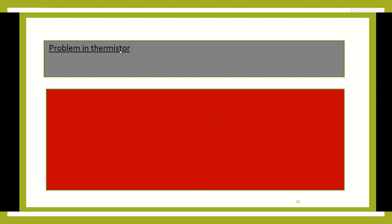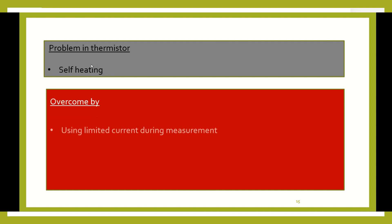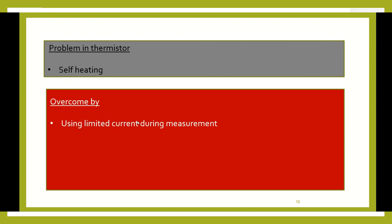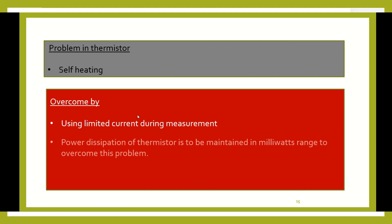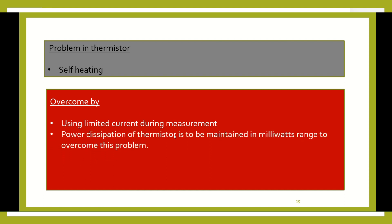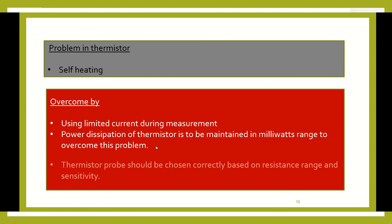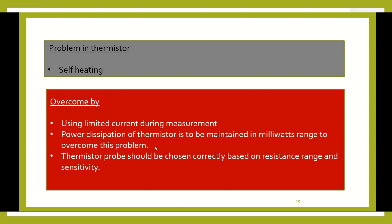A problem with thermistors is self-heating — the device may automatically heat up during use. To overcome this, we can use limited current during measurement. The second option is to maintain the power dissipation of the thermistor in the milliwatts range. We also have to choose the thermistor probe properly based on resistance and sensitivity. By doing this, the self-heating problem can be avoided.